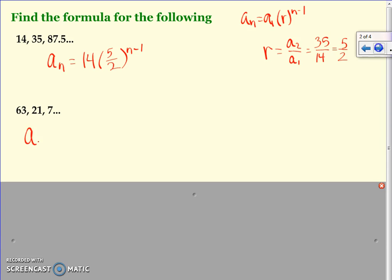Okay. What about this one? So a_n equals what goes here? 63. What's the common ratio? Remember, you take your second term divided by your first term and simplify. What do we get there? 3.